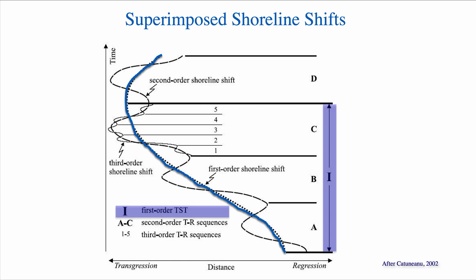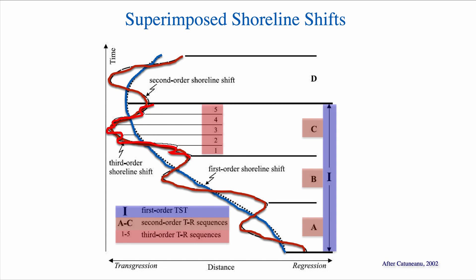But superimposed on those first-order cycles, we have shorter-order cycles, second-order cycles that are put in red here. And you can see that these second-order cycles are more numerous. We have a higher frequency of second-order cycles, so three in this case for one first-order cycle. And of course, we can add on top of those second-order cycles, third-order cycles that are even more abundant than the second-order cycles. And of course, these curves have a lower amplitude but a higher frequency.